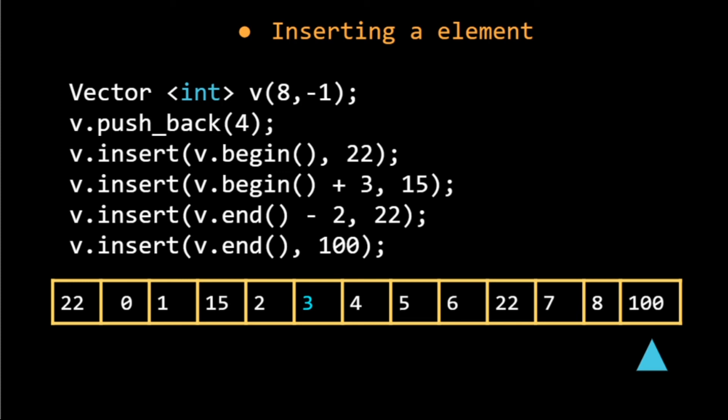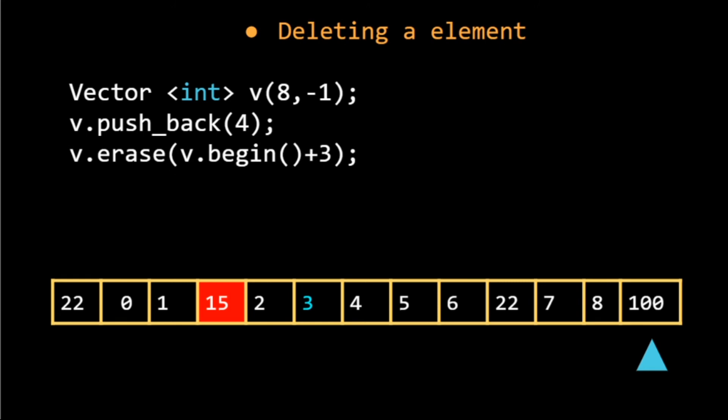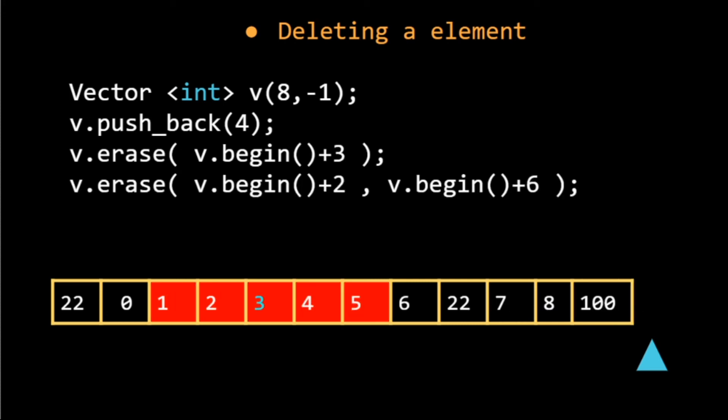We can also delete the element using erase. We have to just give the position from where we want to delete the element. Here I am deleting the element from the index three, that is three units from the beginning of the vector. Or I can give two positions so that it deletes everything between them. Here I am deleting all the elements from the second index to the sixth index.